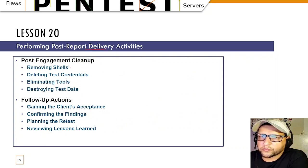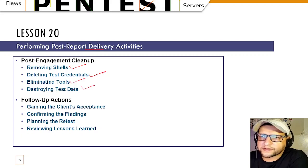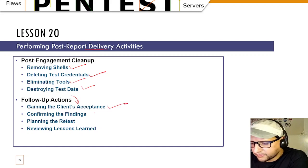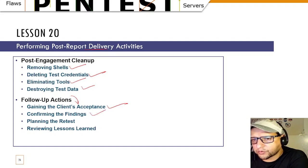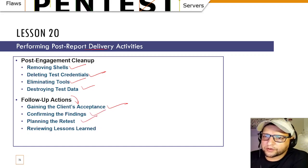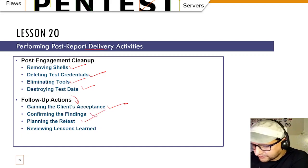Lesson 20 covers post-report delivery activities — removing shells, deleting test credentials, eliminating tools, destroying test data once pen testing is complete, and follow-up steps including gaining client acceptance, confirming findings, planning the retest, and reviewing lessons learned.